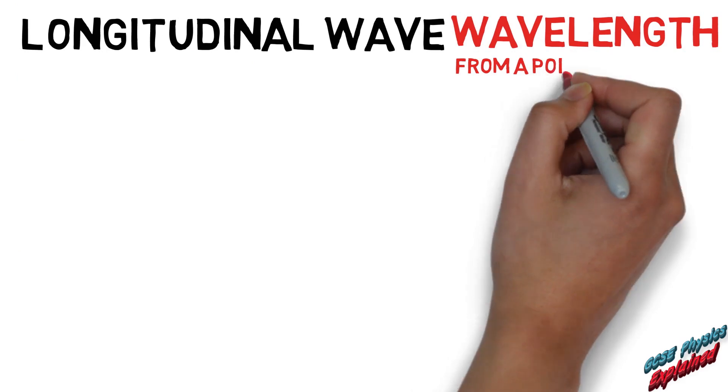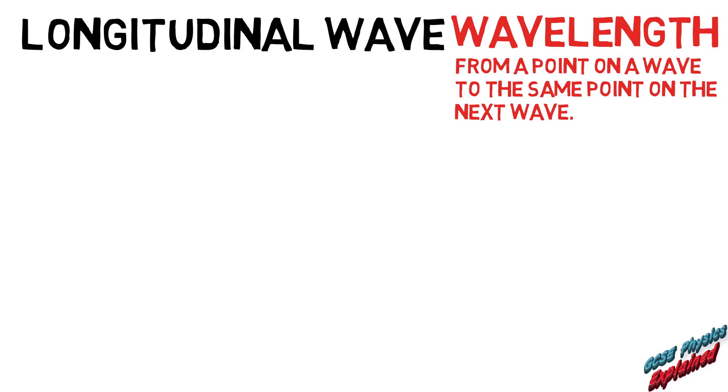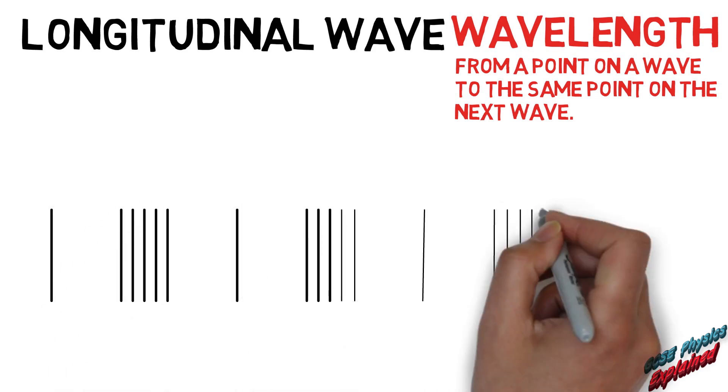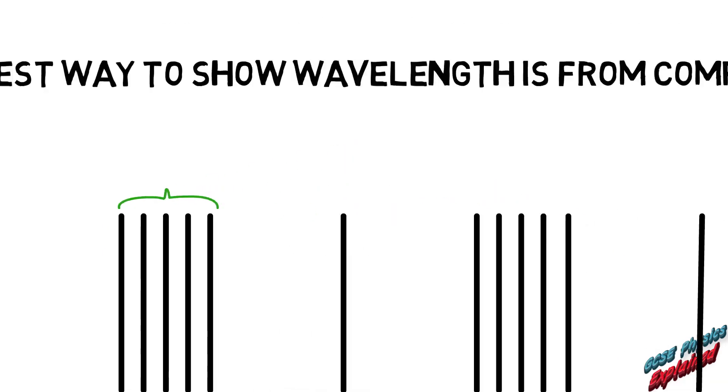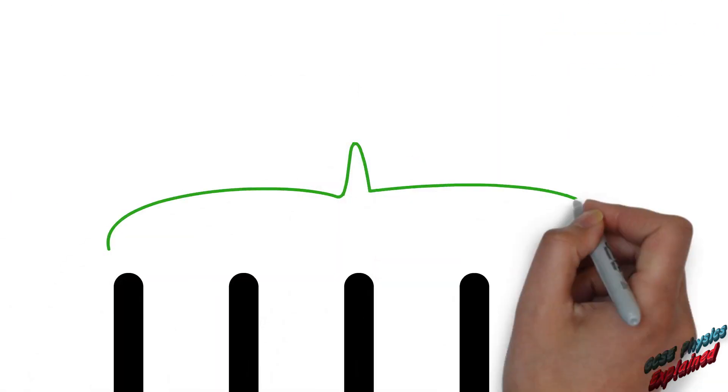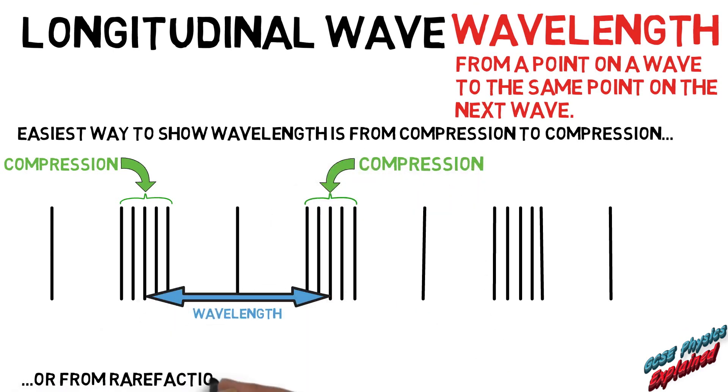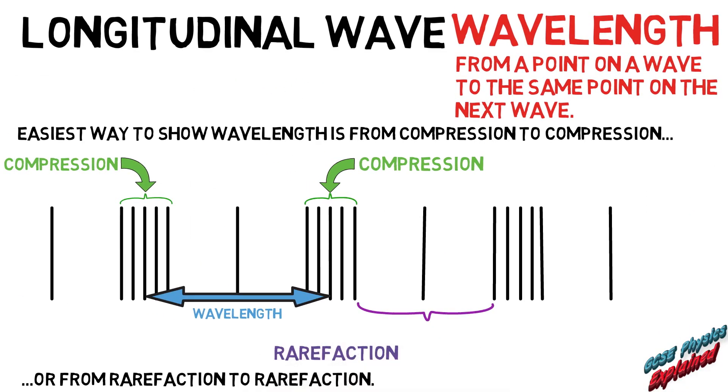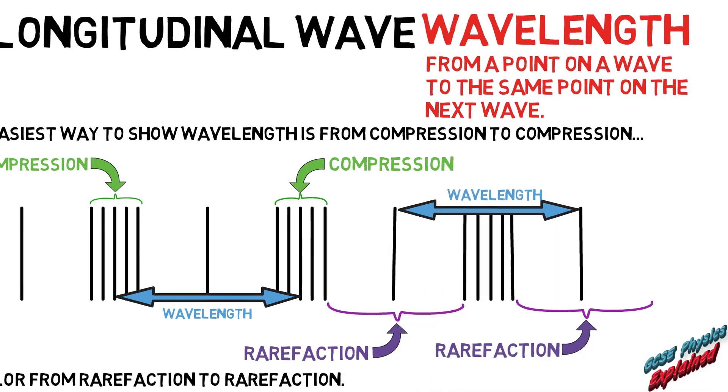Wavelength is the distance from a point on one wave to the same point on the next wave in meters. It has the symbol lambda. The easiest way to show wavelength is from compression to compression, or from rarefaction to rarefaction.